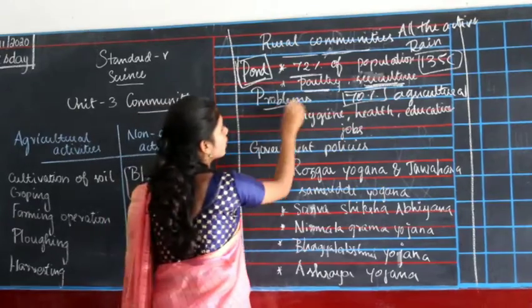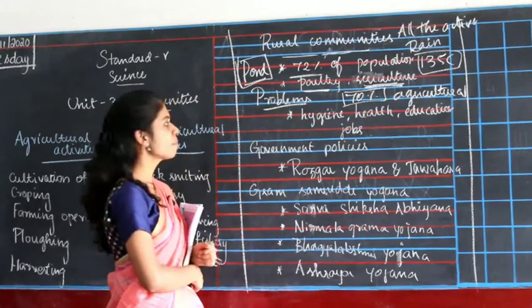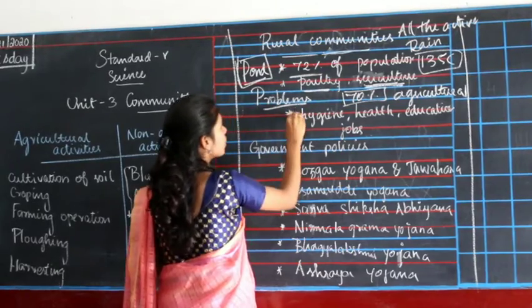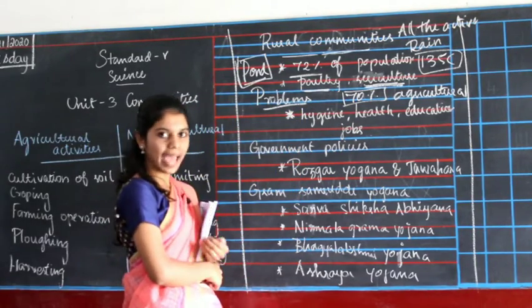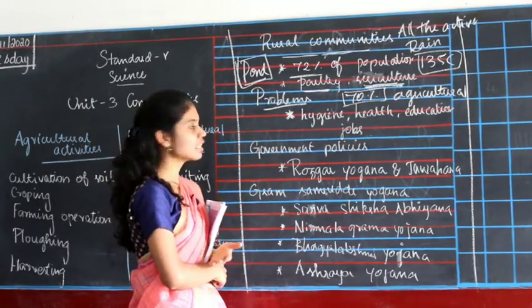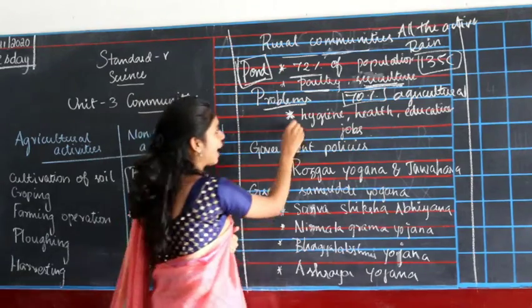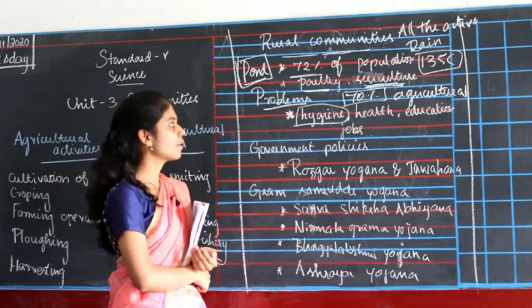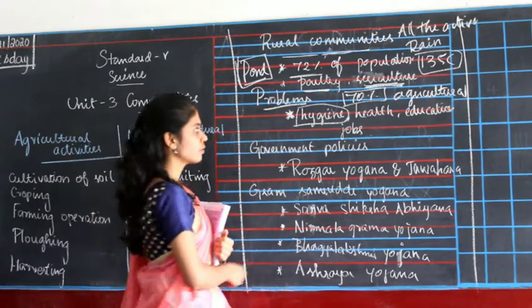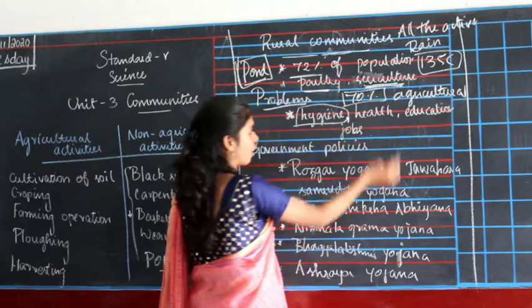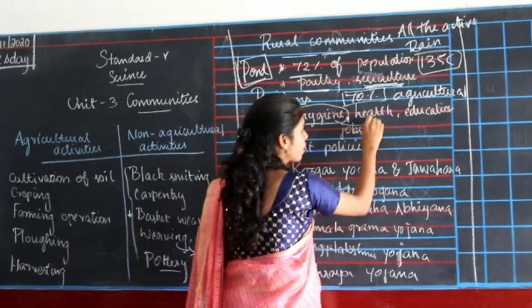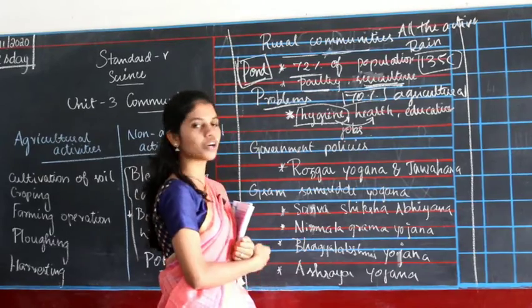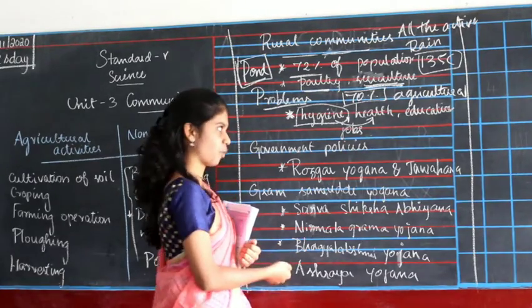What are the problems they face in rural communities? The first one is hygiene. Since they lack proper instruments, they really lack hygiene — they don't have proper sanitation and proper toilets. So hygiene is the first problem. And with lack of hygiene comes health problems: if you don't keep yourself and your surroundings clean, you will get health problems.